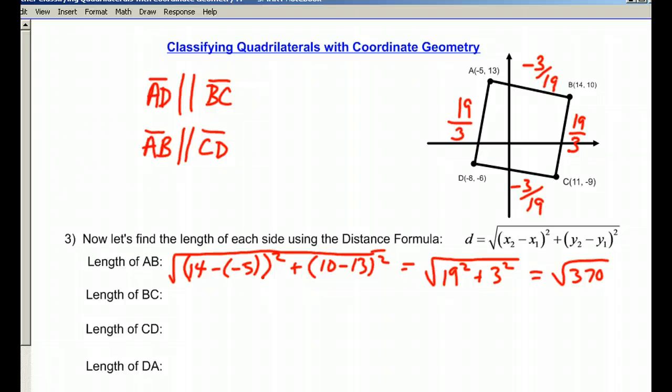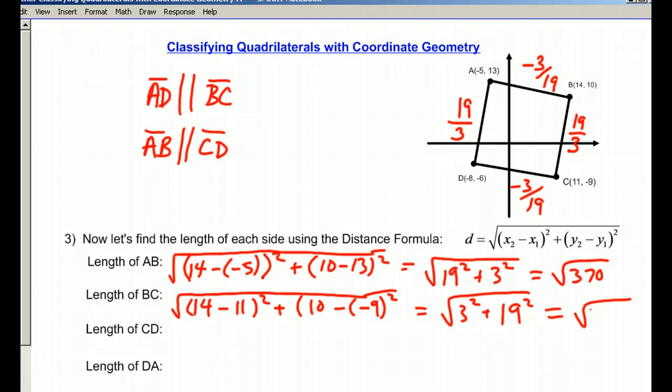The length of BC is going to be the square root of (14 minus 11) squared plus (10 minus negative 9) squared, which is the square root of 3 squared plus 19 squared, equal to the square root of 370.